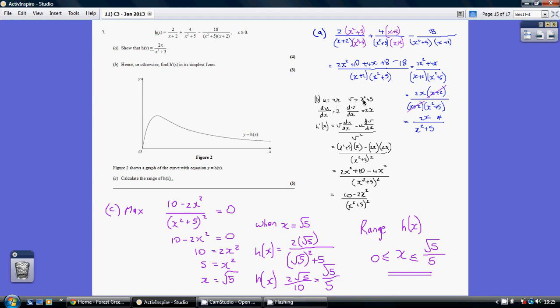We differentiate each of these to give us du dx and dv dx. Now h dash x is v du dx minus u dv dx all over v squared, so we substitute in, multiply out the numerator, and combine our terms. The numerator simplifies to 10 minus 2x squared all over x squared plus 5 all squared.